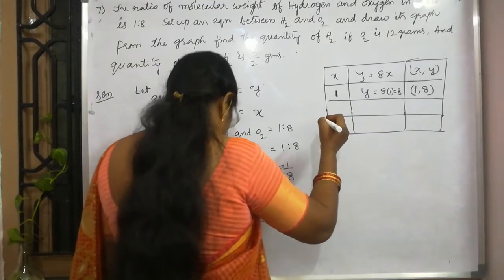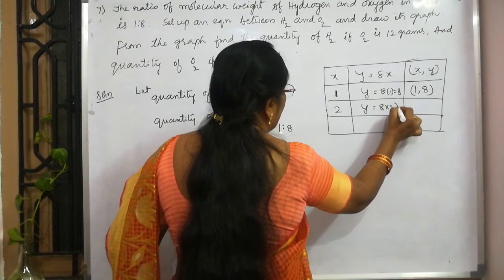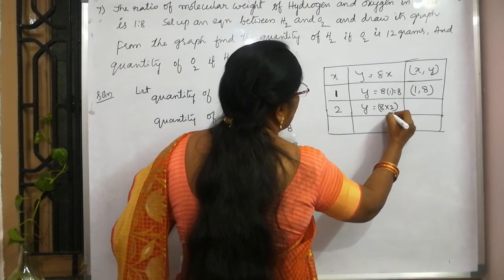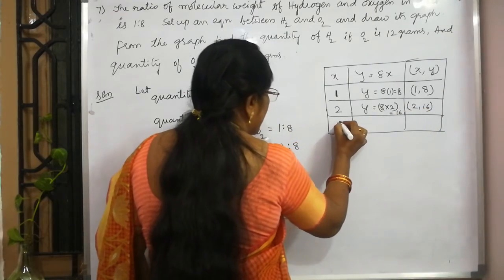If you put x is equal to 2, y is equal to 8 into 2. So, this will give you 16. So, 2 comma 16. The points are 2 comma 16.